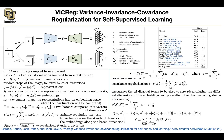VICReg is one of the best methods when it comes to top-1 and top-5 under the linear evaluation paradigm, where you put a linear layer on top of these features and train only the linear part while freezing the feature extractor. Any questions? Was everything clear? Awesome.